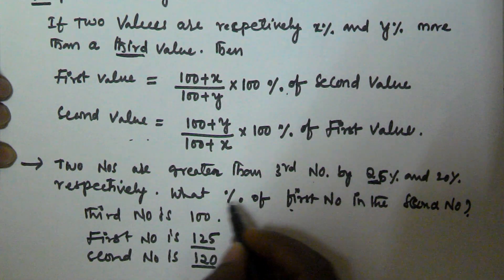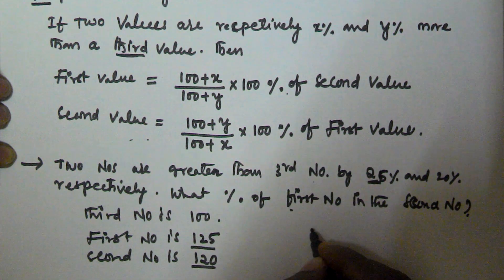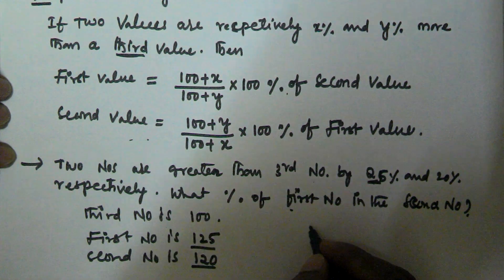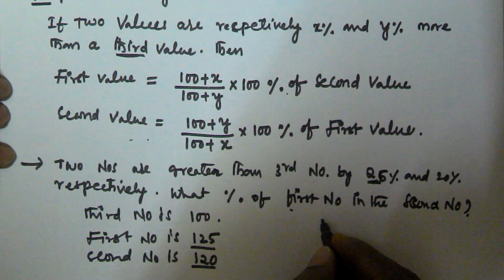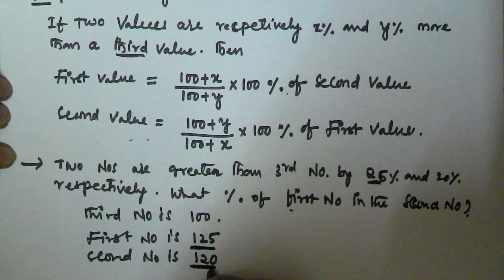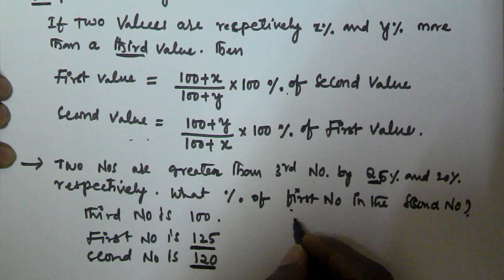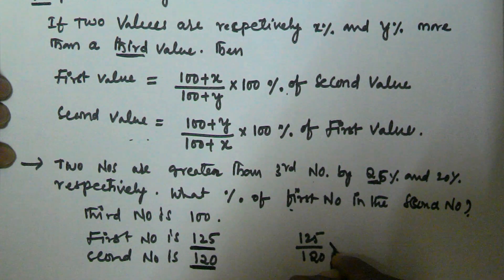We have to find what percentage of the first number is the second number. The first number is 125, the second number is 120. So that is 125 by 120 into 100.